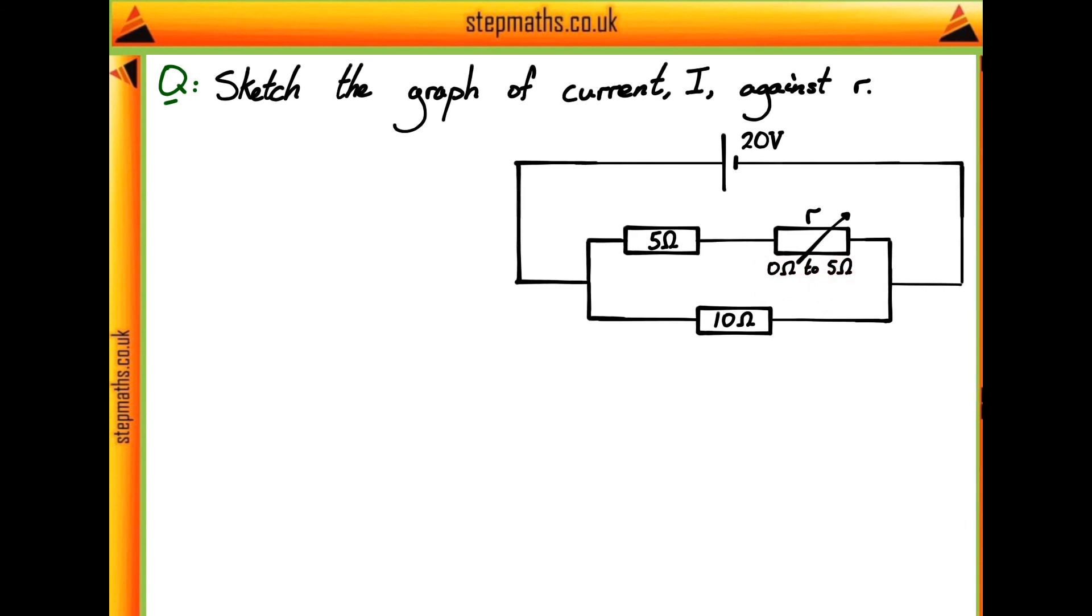The question asks us to sketch a graph of the current I through the circuit against this variable resistance R. If you'd like to have a go doing this question yourself then please pause the video now, otherwise we'll have a go at doing it together.